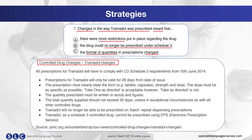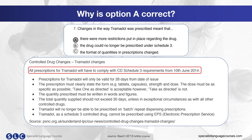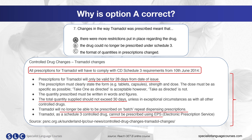Now read through the text and choose the option which you think fits best. The correct answer is A. The text states that all prescriptions will have to comply with the CD schedule requirements from the 10th of June 2014, and restrictions are outlined: prescriptions will only be valid for 28 days after issue and the quantity should not exceed 30 days. It also states that batch repeat prescriptions will no longer be prescribed and that tramadol cannot be prescribed using the electronic prescription service. These examples clearly illustrate how more restrictions have been put in place, so option A is correct.